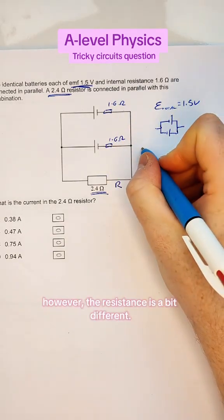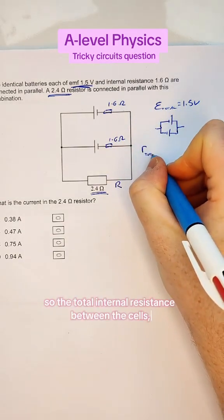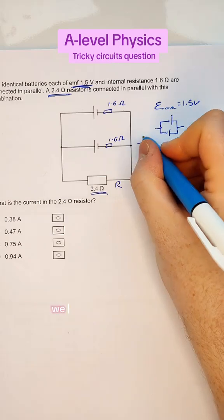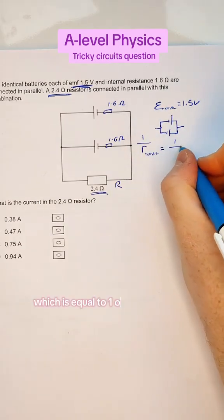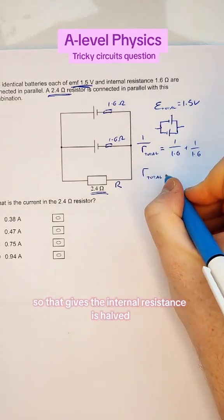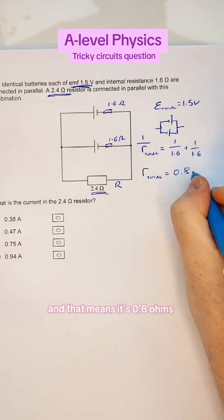However, the resistance is a bit different. The total internal resistance between the cells, they are in parallel, so we have to add them in parallel. So we have 1 over the total, which is equal to 1 over 1.6 plus 1 over 1.6. That gives the internal resistance as halved. That means it's 0.8 ohms.